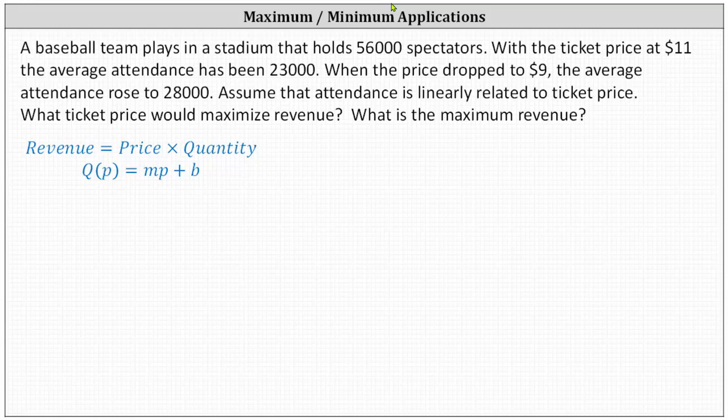A baseball team plays in a stadium that holds 56,000 spectators. With a ticket price at $11, the average attendance has been 23,000. When the ticket price dropped to $9, the average attendance rose to 28,000. Assume that attendance is linearly related to ticket price. What ticket price would maximize revenue and what is the maximum revenue?